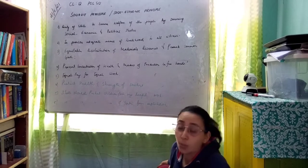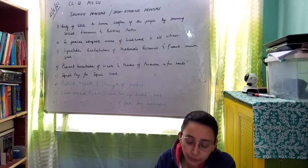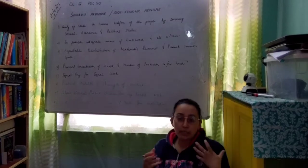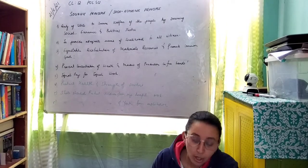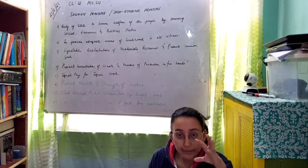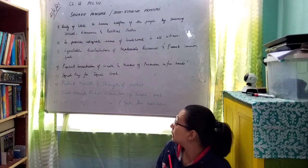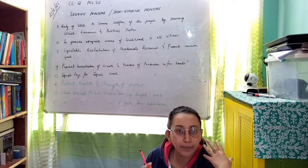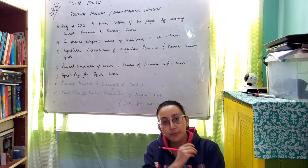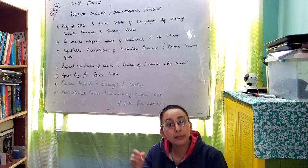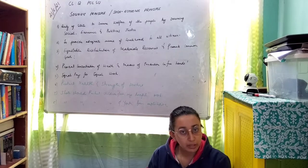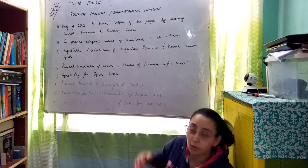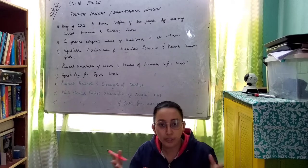Principle one: it is the duty of the state to secure the welfare of the people by securing socio-economic and political justice. This means that people should be socially included, economically benefited, and politically justified. For a detailed explanation of socio-economic and political justice, please refer to your offline class notes and recapitulate.